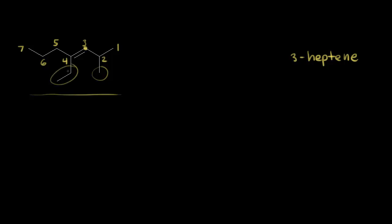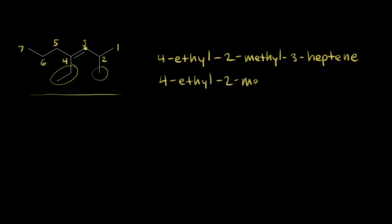We think about the substituents coming off of our carbon chain: a methyl group coming off carbon two and an ethyl group coming off carbon four. We put those in alphabetical order, so 4-ethyl comes first, then 2-methyl, giving us 4-ethyl-2-methyl-3-heptene. You could also write this as 4-ethyl-2-methyl-hept-3-ene. Either one is accepted.